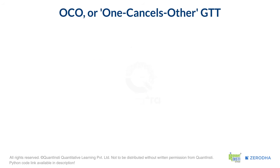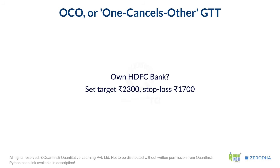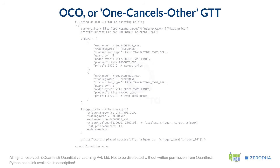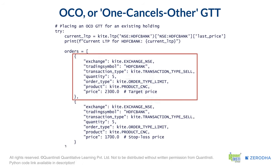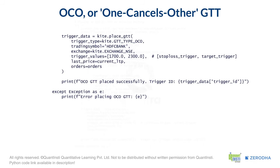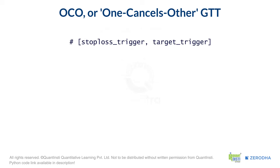Now for the One Cancels Other GTT. Let's say we own shares of HDFC Bank and we want to set a target at Rs. 2300 and a stop loss at Rs. 1700. We define two orders in our orders list: one for our target at Rs. 2300 and one for our stop loss at Rs. 1700. In the place GTT call, we set the trigger type to OCO and provide both trigger values in the trigger values list. Please ensure you specify the values correctly — first the stop loss trigger, then the target trigger — else it will result in an error. The API then links these two orders, ensuring that if one executes, the other is automatically cancelled.